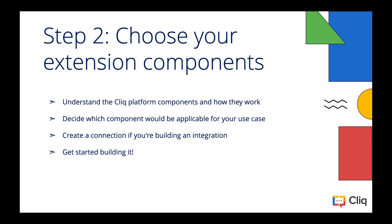The next step is to choose your extension components. You've decided what you want to build, so now you should zero down on what components your extension should have and get started with Deluge and the Cliq Deluge objects. For example, if you want to add a task right from Cliq, it helps to analyze what goes into adding a task — you might need a task name, a brief description, a deadline, and an assignee. When you want to collect all this information, it is best to analyze which platform component to apply. The best approach here is to invoke a form so the user can add all these details in one go.